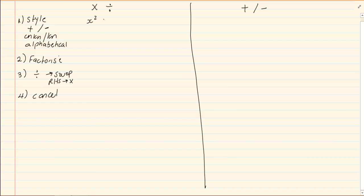x squared minus 7x plus 12 all over x cubed minus 64 divided by 16 minus x squared divided by x cubed plus 4x squared plus 16x. Now, if you look at this question, you will notice that 16 minus x squared is not in the correct style.